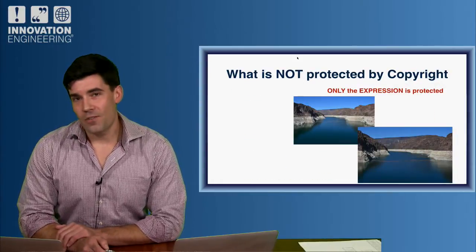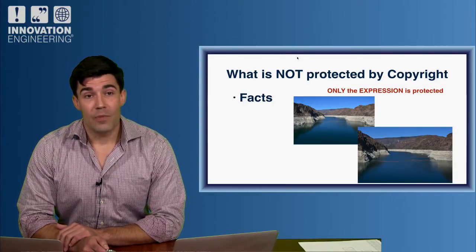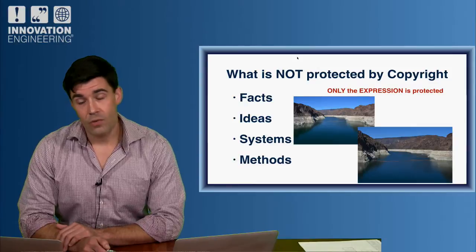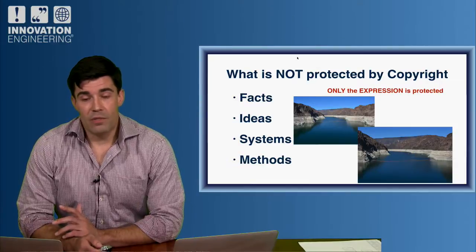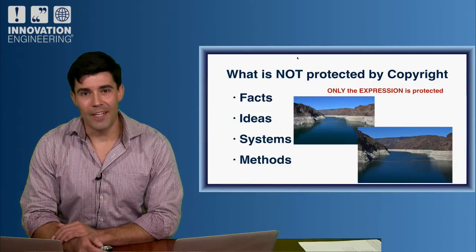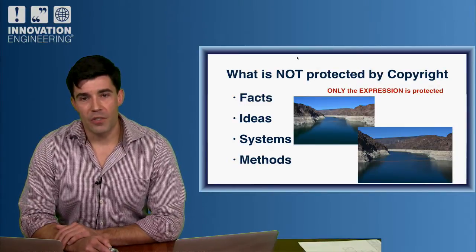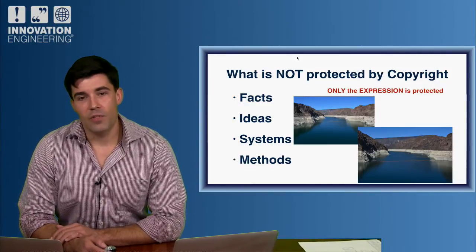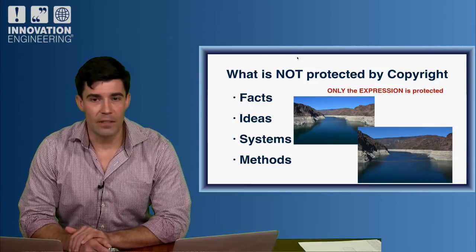So what can't be protected? You can only get the expression protected. You can't protect facts, ideas, systems, or methods. Those last two — systems and methods — you need to go get patent protection for. Ideas have nothing behind them until you make them concrete, and everybody needs to be able to use facts for free. Here's an example of how expression changes: I was in Las Vegas and went to Hoover Dam and took two pictures — they're slightly different, so you get protection for both of them, not just the idea of anybody standing there taking that photograph.